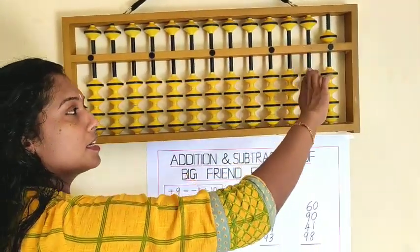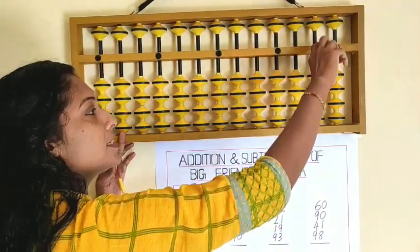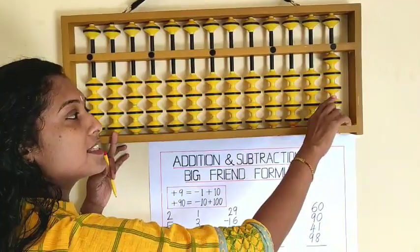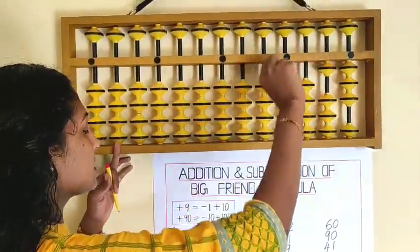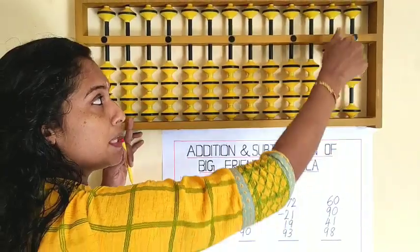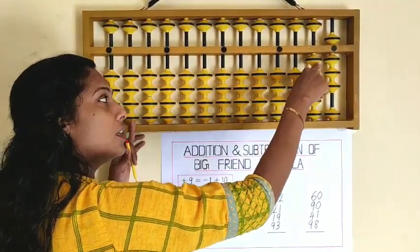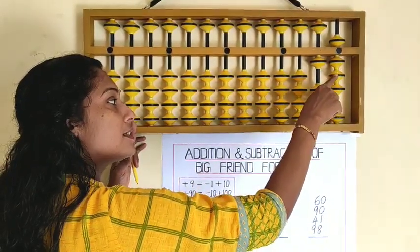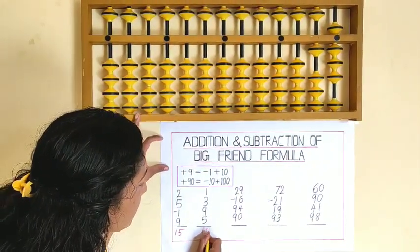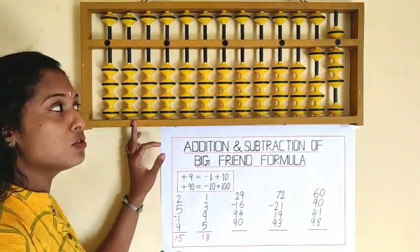Before starting the next sum we have to clear the abacus scale. The next sum is 1 plus 3 plus 9. That is minus 1 plus 10, plus 5. How to do plus 5? We can directly do plus 5. What is the answer? 10, 15, 60, 70, 80. Our answer is 80.